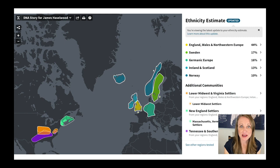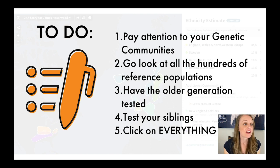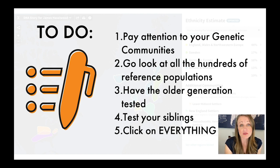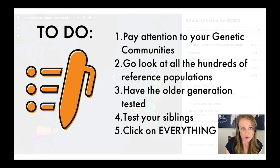That's all we've had time for in our five minutes. But here's a quick to-do list. One: pay attention to your genetic communities — they matter. Two: go look at all the reference populations just to familiarize yourself with them and see if the locations your ancestors are from are on the list. Three: have your older generation tested. If your parents or grandparents have not taken a DNA test, they are going to reveal much more about their heritage than you can, as you only have a small portion of your DNA.